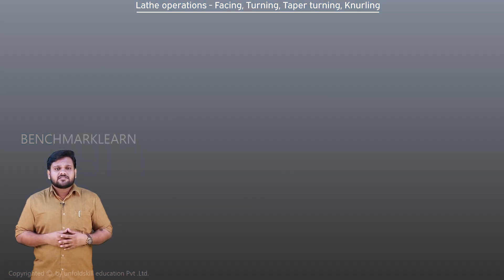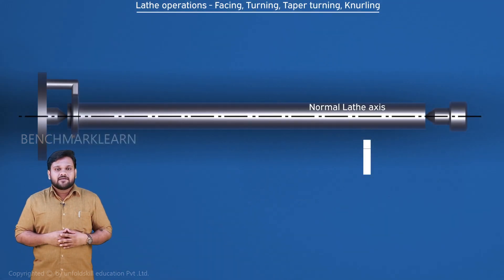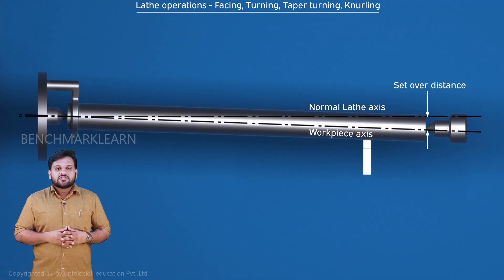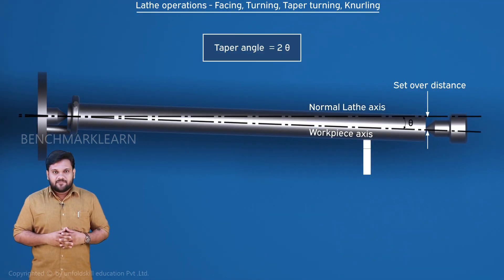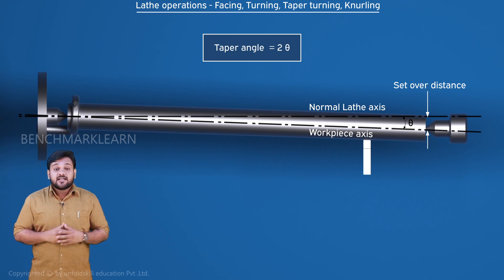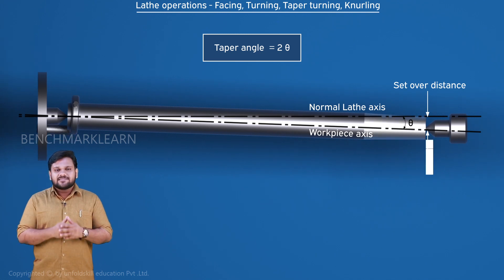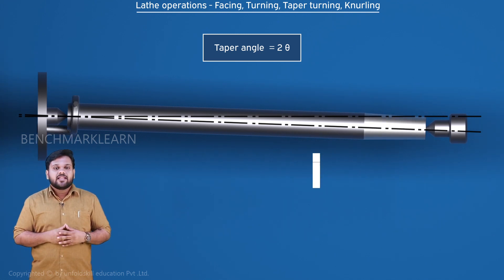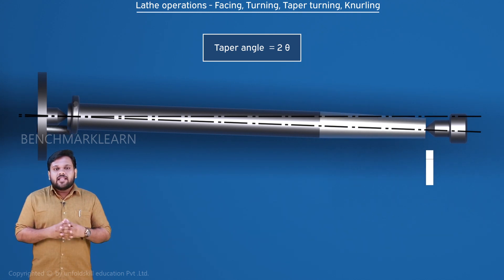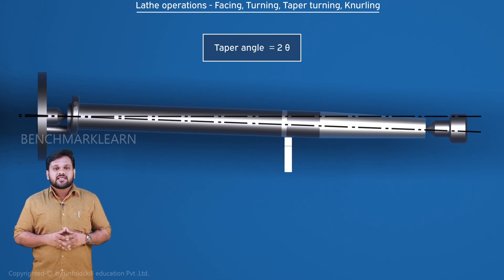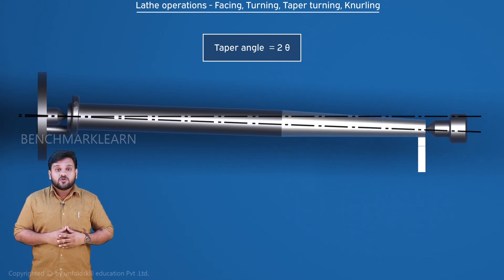The second one is the tailstock set over method. We shift the axis of rotation of the workpiece by half the taper angle. This is done by moving the tailstock a certain distance perpendicular to the lathe axis. Then the tool is fed parallel to the lathe axis, and this method is used for producing small tapers on long jobs.